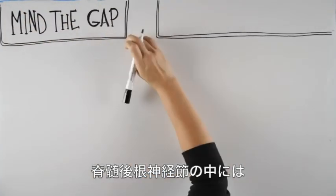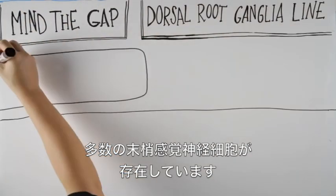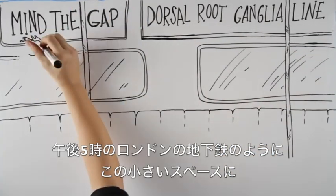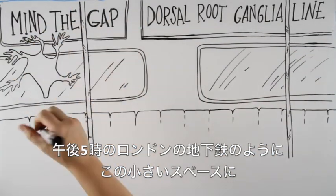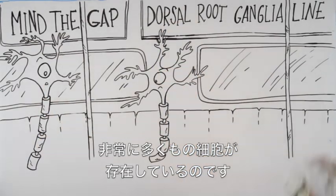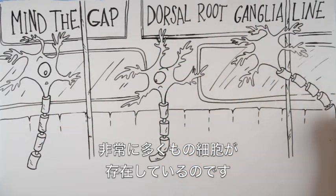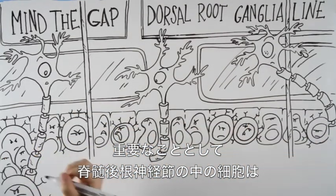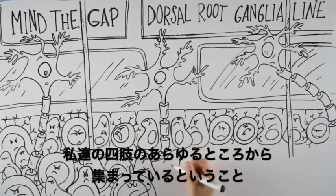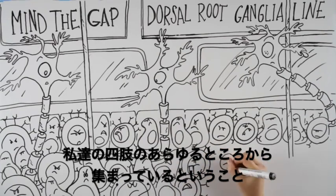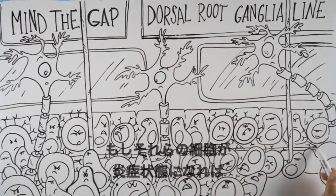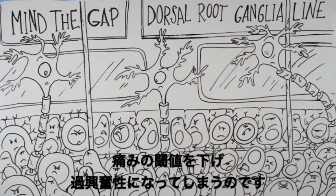Inside the dorsal root ganglia are thousands and thousands of cell bodies of the peripheral sensory neurons. It is very crowded within this small area, almost like the London subway at 5pm. Importantly, the neurons within a dorsal root ganglion originate from different sites in our extremities. If these neurons lie in an inflammatory environment, they will lower their firing thresholds and become hyperexcitable.